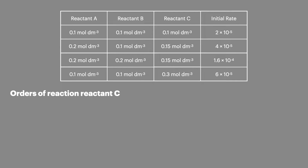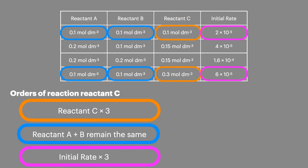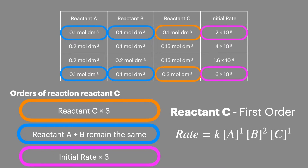For the final part of the data set, reactant C, we'll look at lines one and four. It's a little bit more complicated because they're not next to each other, but we can see that the reactant has multiplied by three times. A and B have both been kept the same, and we can look at the initial rate and see that it's also increased by three times. This shows reactant C to be first order and allows us to complete our rate equation with the concentration of C to the power of one.